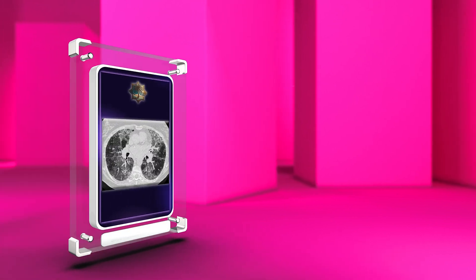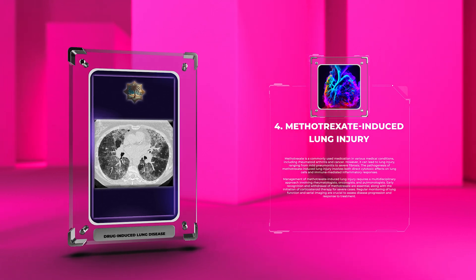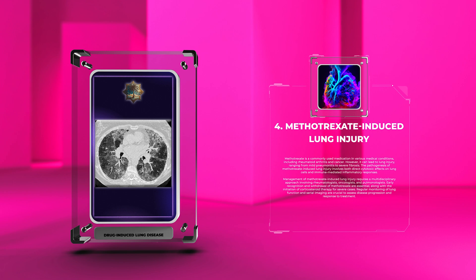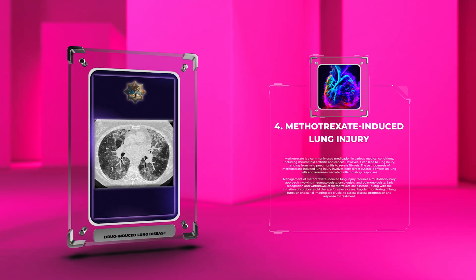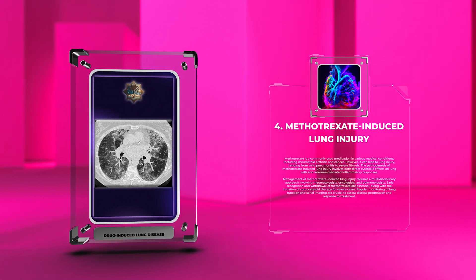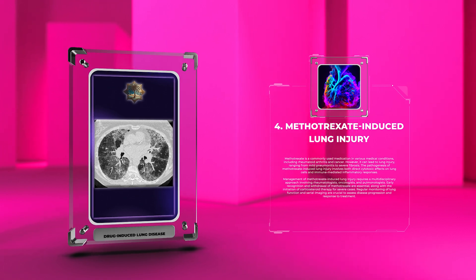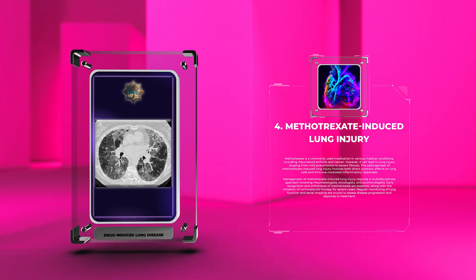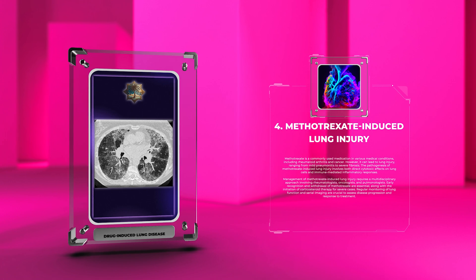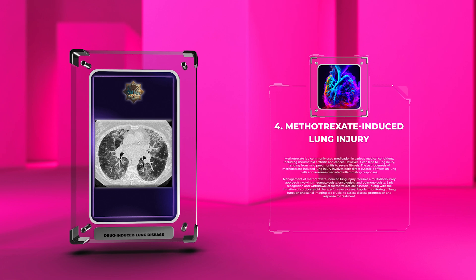Methotrexate is a commonly used medication in various medical conditions, including rheumatoid arthritis and cancer. However, it can lead to lung injury, ranging from mild pneumonitis to severe fibrosis. The pathogenesis of methotrexate-induced lung injury involves both direct cytotoxic effects on lung cells and immune-mediated inflammatory responses. Management requires a multidisciplinary approach involving rheumatologists, oncologists, and pulmonologists. Early recognition and withdrawal of methotrexate are essential, along with the initiation of corticosteroid therapy for severe cases. Regular monitoring of lung function and serial imaging are crucial to assess disease progression and response to treatment.